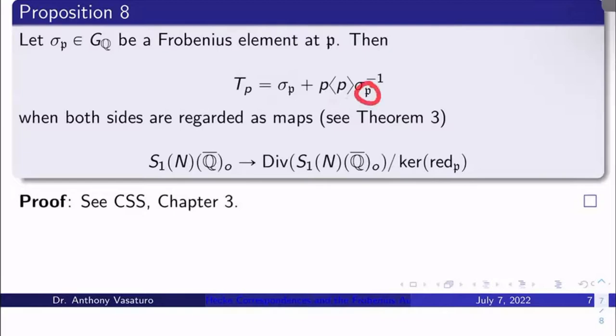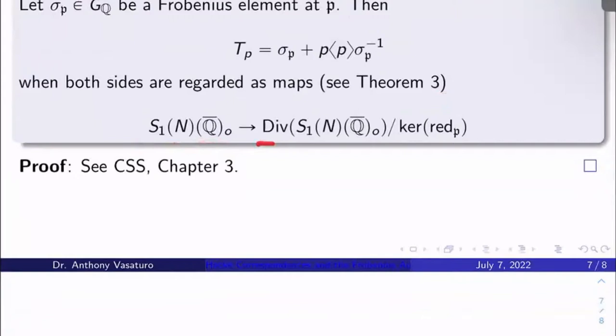How am I regarding both sides here? I'm regarding both sides as maps, see theorem 3, from S₁(N)(Q̄)_O to its divisor group. Remember, the Hecke correspondence can definitely be viewed as a map from S₁(N)(Q̄) to its divisor group mod kernel of reduction. You can certainly take the quotient there.